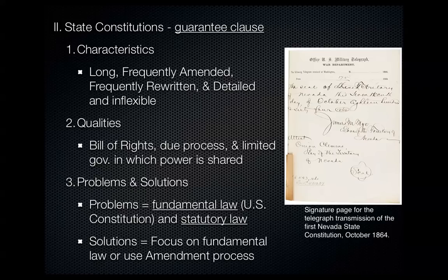Because state constitutions are so easily amended, they contain many examples of statutory law — like the provision about not needing a license to sell garden produce. Another problem related to excessive detail is that portions of many state constitutions have become very obsolete. There are very obsolete laws that no longer apply, yet they're still in the state constitution.